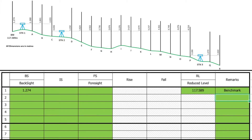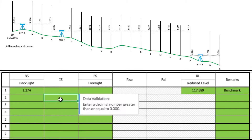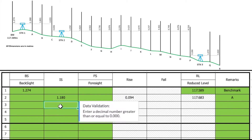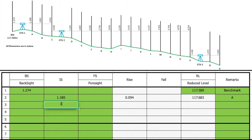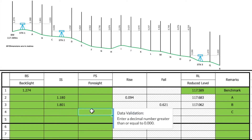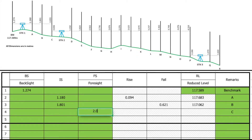Now with the level at station one, we complete another few readings. The next ones are going to be intermediate sites, entered under the IS column, taking a new row for each value. The next reading is 1.180, with remark point A. Then 1.801 for point B. Then for the next reading at point C, this is the last reading when the level is at station one, so it is entered under the foresight column: 2.055.